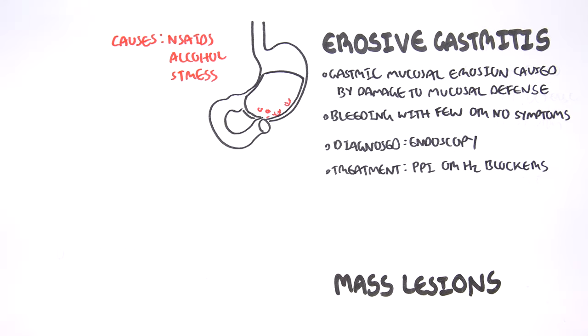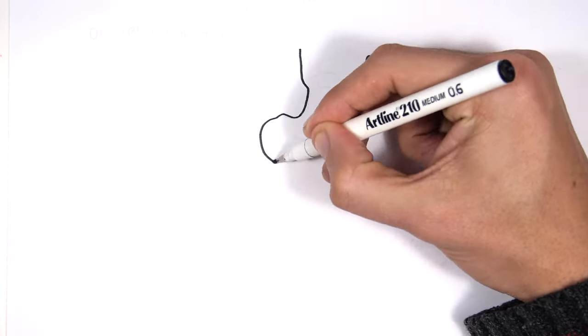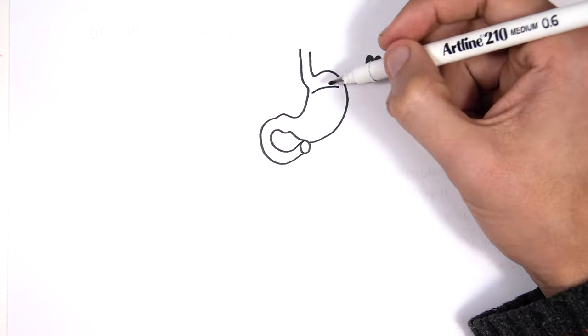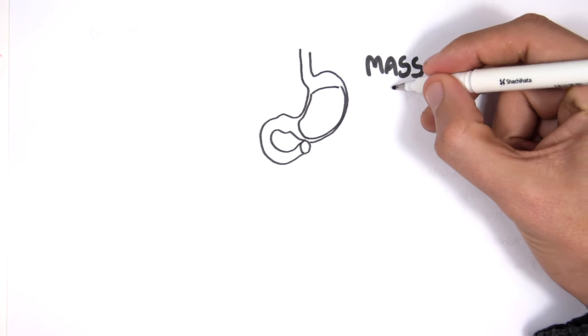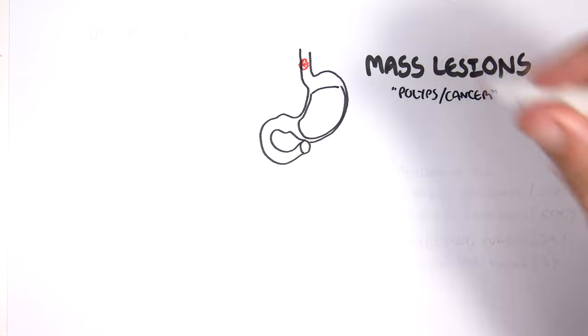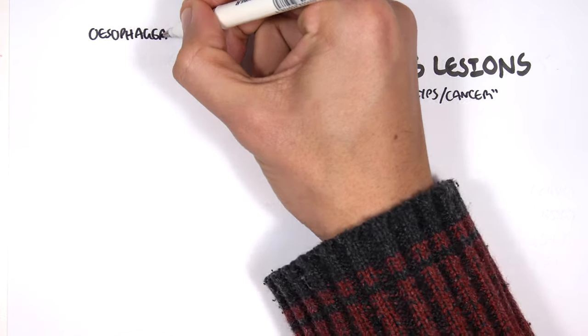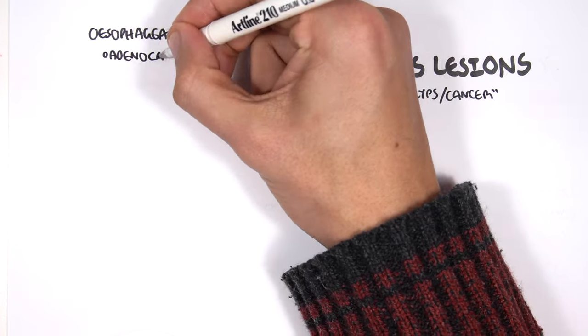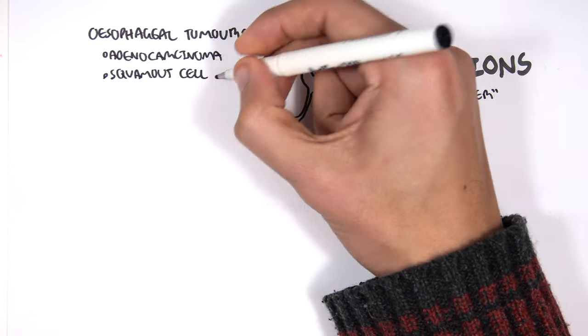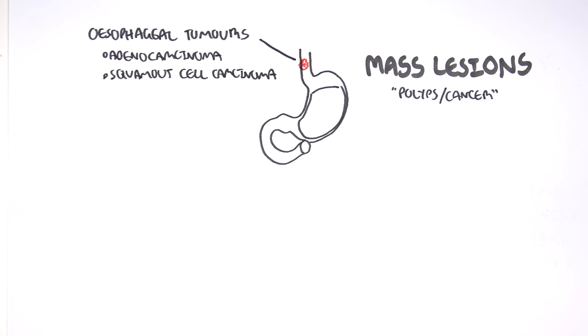The next potential cause of upper GI bleeding are mass lesions: polyps and tumors, cancer. We can have mass lesions which are esophageal tumors, which can be adenocarcinoma or squamous cell carcinoma. We talked about how Barrett's esophagus can lead to adenocarcinoma due to the metaplasia that occurs at the lower part of the esophagus.